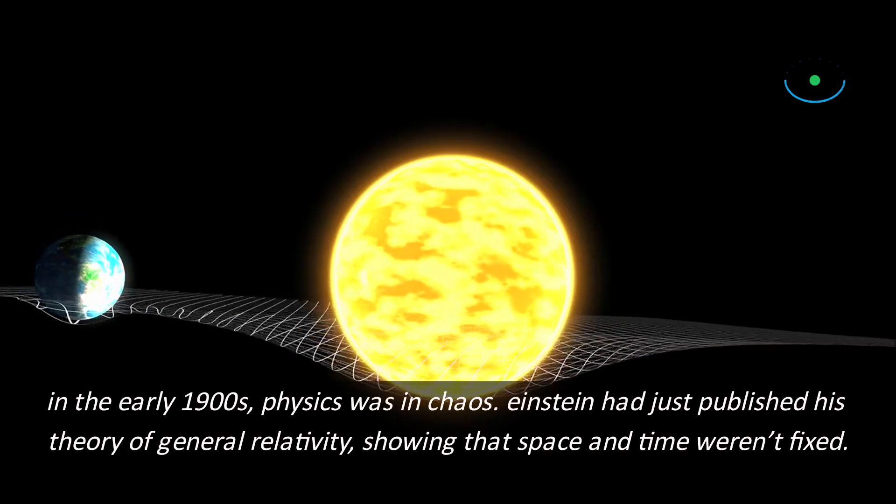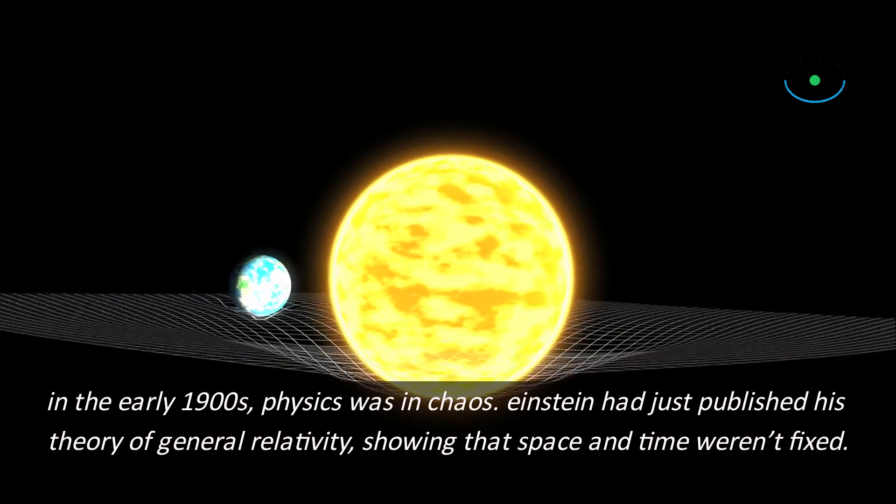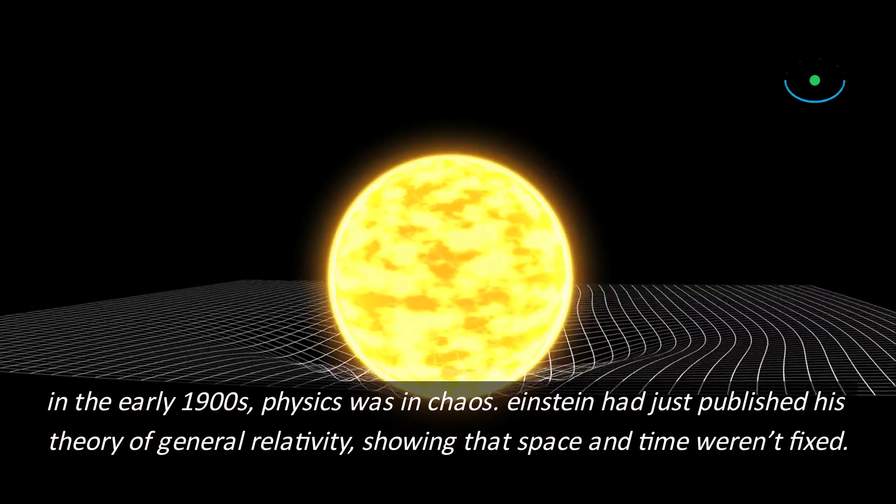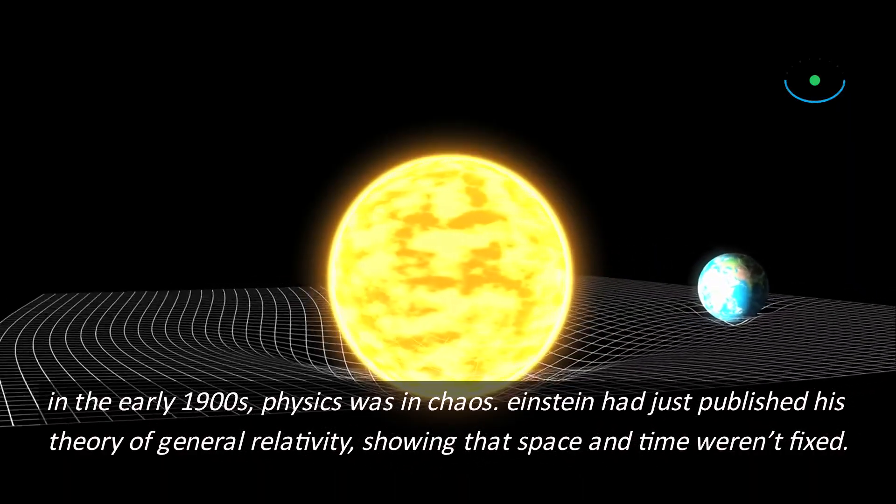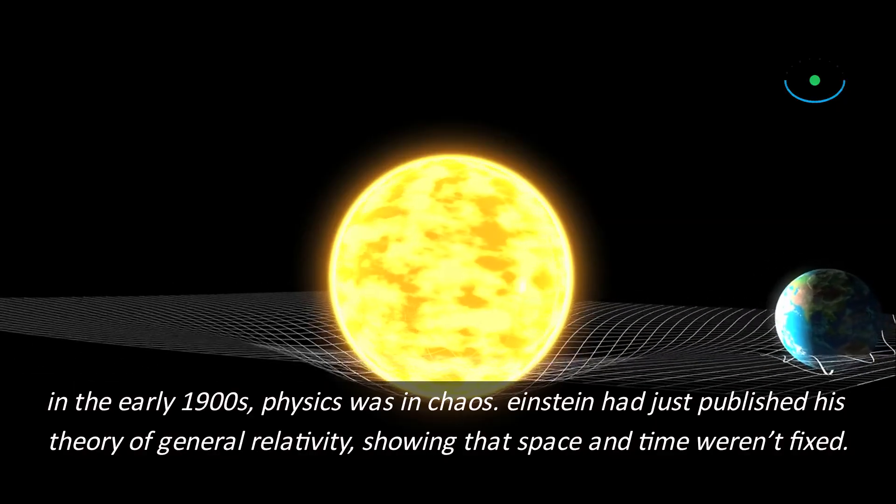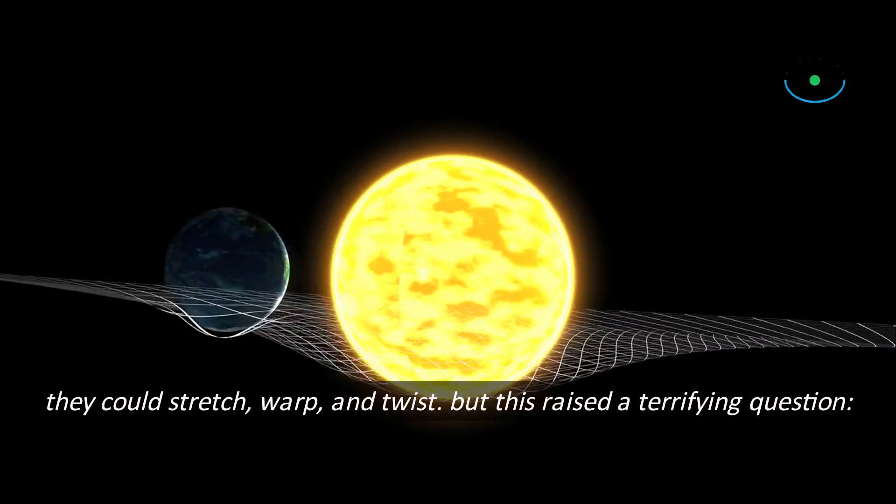In the early 1900s, physics was in chaos. Einstein had just published his theory of general relativity, showing that space and time weren't fixed. They could stretch, warp, and twist.